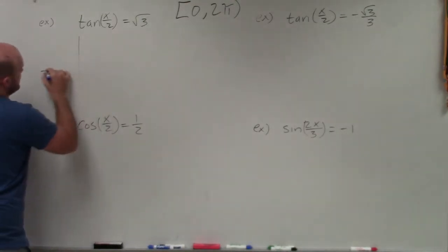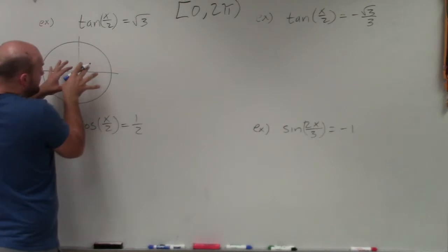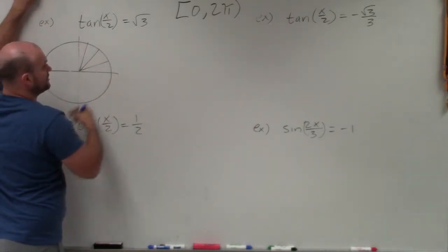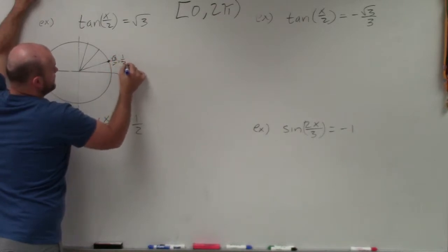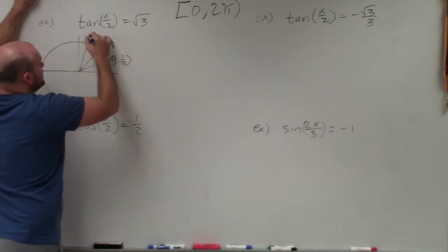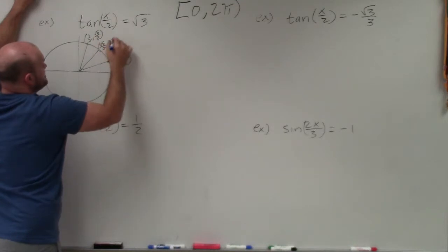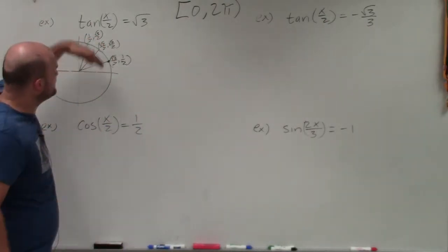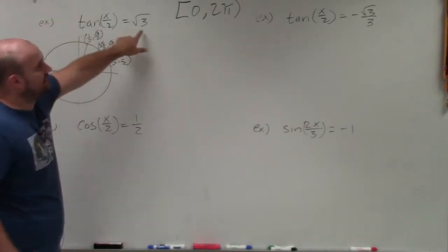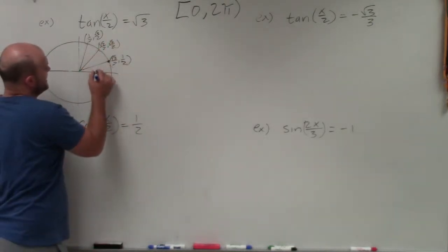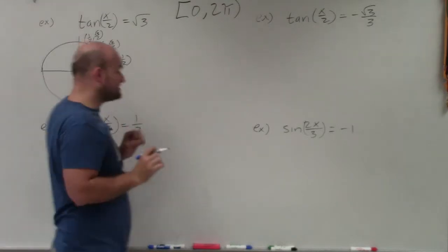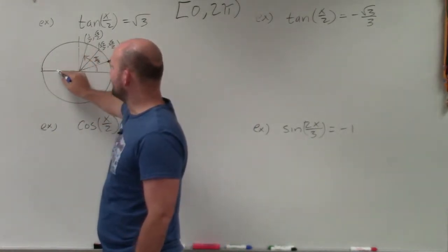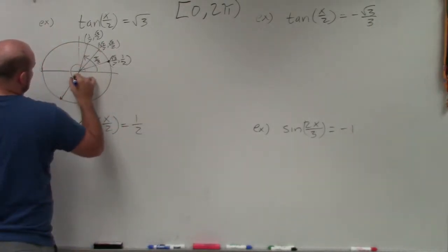We're going to use our unit circle. When we're looking for the angle that has tangent equal to √3, I'm ignoring the x/2 for now. There are three relevant points: (√3/2, 1/2), (√2/2, √2/2), and (1/2, √3/2). Remember, cosine equals the x-value, sine equals the y-value, and tangent equals y over x. There's only one of these where y/x = √3, and that's at the angle π/3.